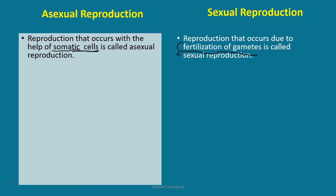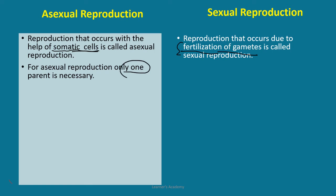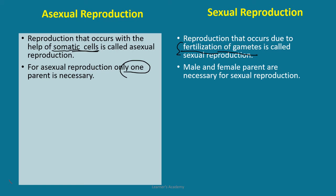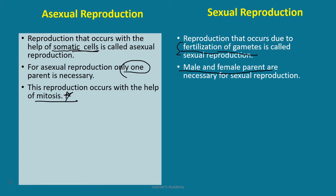In asexual reproduction, only one parent is necessary, whereas in case of sexual reproduction, male and female parents are necessary. In case of asexual reproduction, this reproduction occurs with the help of mitosis, so the 2N chromosome number remains 2N — they don't become haploid N.